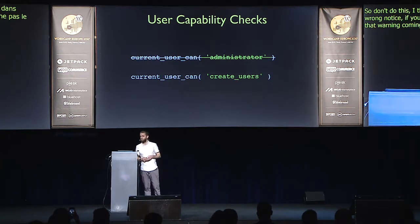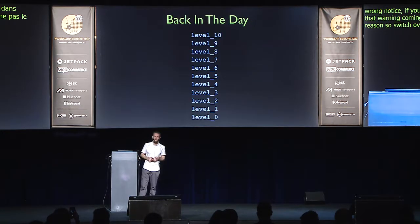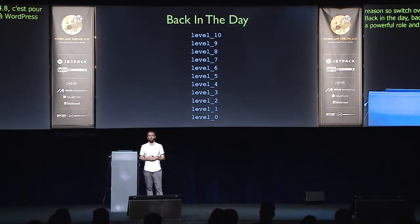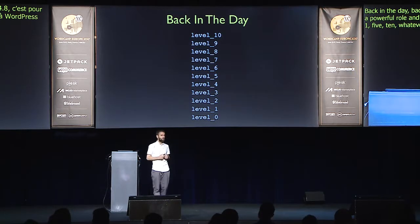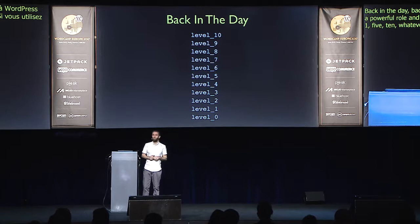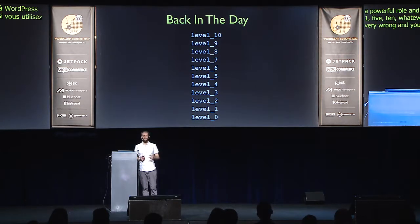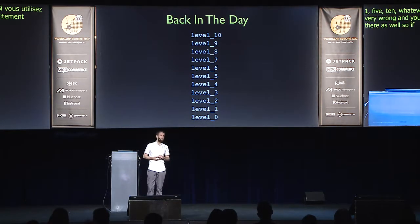Back in the day — back up to WordPress 2.0 — WordPress didn't really have a powerful roles and capabilities API; it just used user levels. A user was level 1, level 5, level 10, whatever. If you're still using these levels in your code, you're doing it very wrong and years out of date — you'll see doing-it-wrong notices. It's a very old system, but because WordPress is committed to backwards compatibility, it still actually does work even in WordPress 4.8.